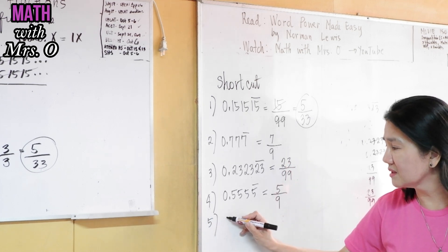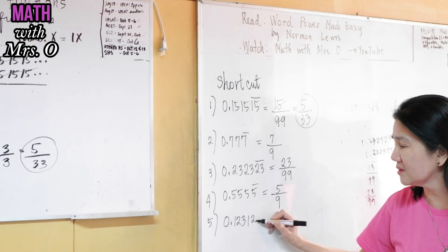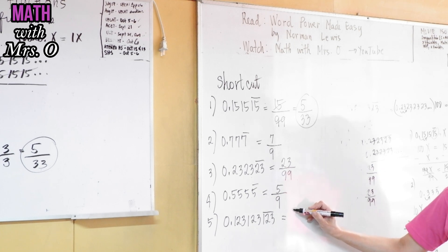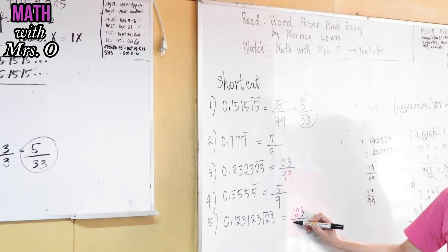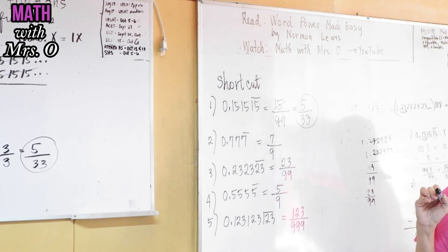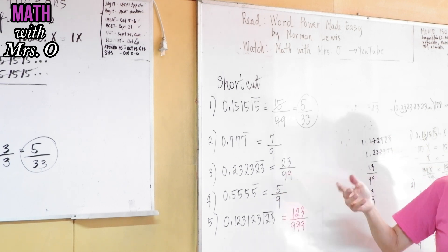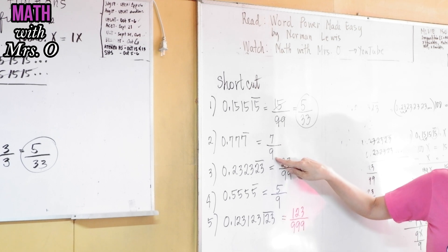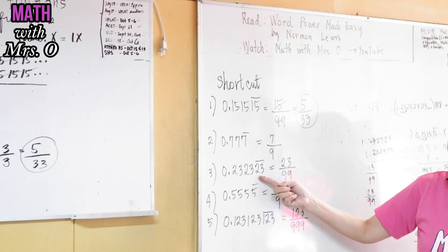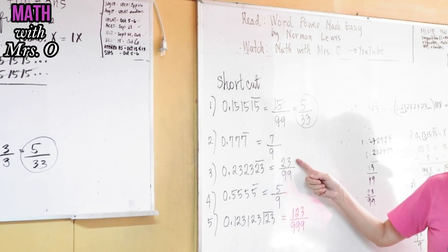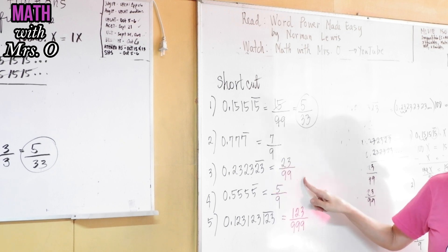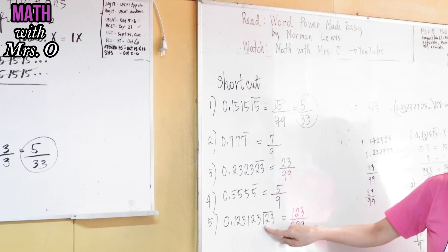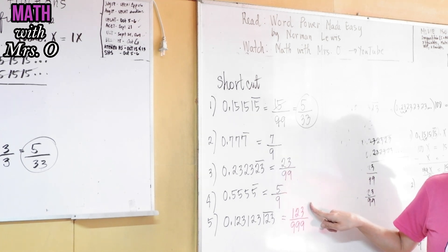Let's say we have 0.123123123 bar — so 1, 2, 3 is repeating. The answer is 123 over 999, because there are three repeating decimals. So to repeat the shortcut: one repeating decimal → copy it over 9; two repeating decimals → copy them over 99; three repeating decimals → copy them over 999.